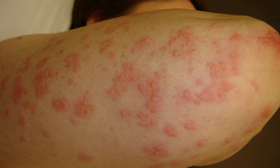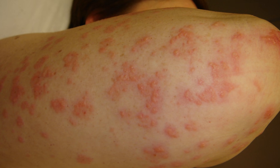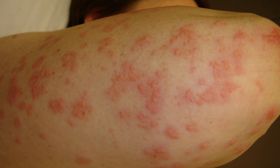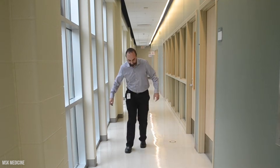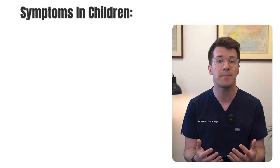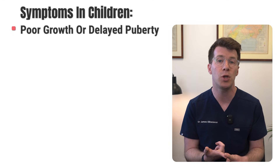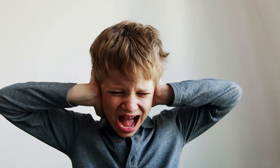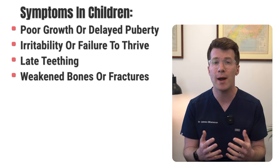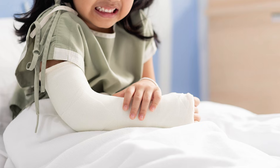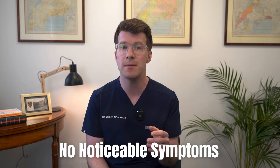Dermatitis herpetiformis is an itchy rash with blisters, often on the elbows, knees or buttocks, and it looks like this. Some people even have problems with coordination or balance. In children, symptoms might include poor growth or delayed puberty, irritability or failure to thrive, late teething, as well as weakened bones or fractures due to poor calcium absorption. It is important to note that some people may have no noticeable symptoms, but are still at risk of complications if the condition is not treated.